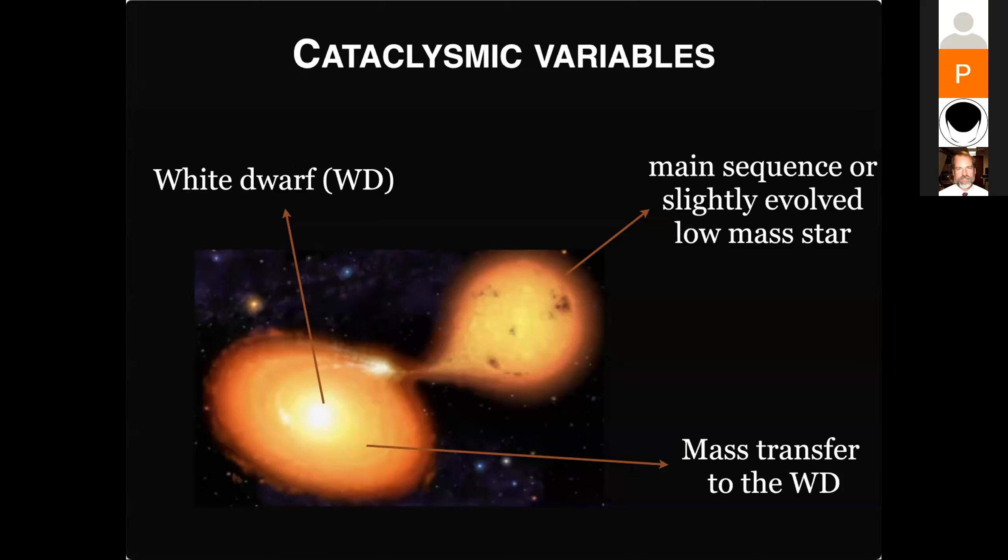And in cataclysmic variables, the jet is not important. So the main system is the accretion disk, the main emission. This is the image for a standard cataclysmic variable. The natural dynamical configuration of the mass transfer is accretion disk.